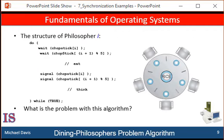Now how do we solve this problem? One simple solution is to represent each chopstick with a semaphore. A philosopher tries to grab a chopstick by executing a wait operation on that semaphore and releases the chopstick by executing a signal operation on the appropriate semaphore. So the shared data are semaphore chopstick with five elements, where all the elements of chopstick are initialized to one. Remember, we have five philosophers.